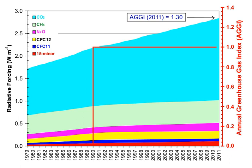If output of a gas into the atmosphere ceased, then after time τ its concentration would decrease by about 63%. The atmospheric lifetime of a species therefore measures the time required to restore equilibrium following a sudden increase or decrease in its concentration in the atmosphere. Individual atoms or molecules may be lost or deposited to sinks such as the soil, the oceans and other waters, or vegetation and other biological systems, reducing the excess to background concentrations. The average time taken to achieve this is the mean lifetime.